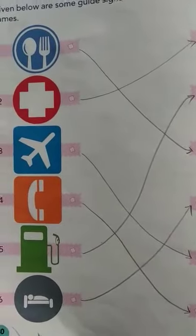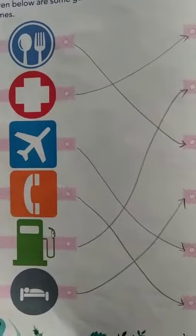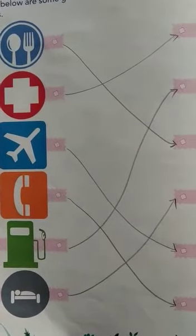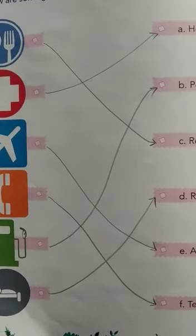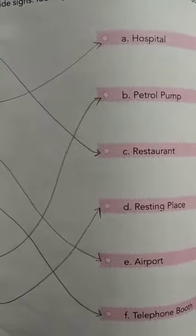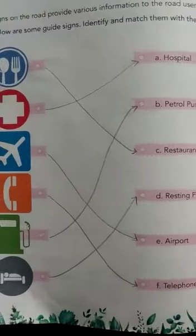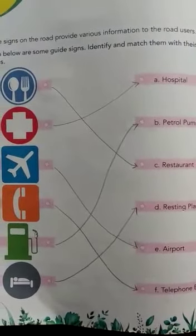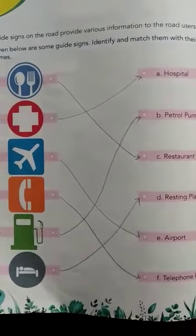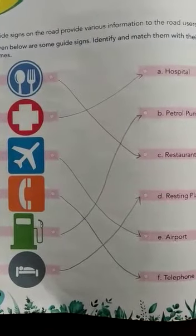The next one is a picture of a person who is resting. It is the sign of a Resting Place. So exercise number 6 is complete.